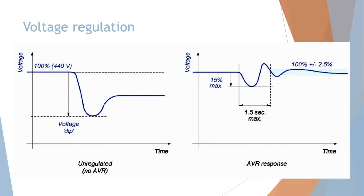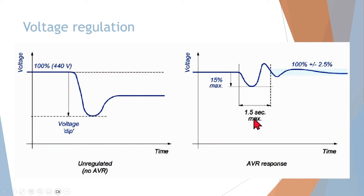By regulatory requirements from IACS or class regulation — classification society regulations — in the marine industry you have to maintain bus bar voltage. Your generator or AVR characteristic should maintain the bus bar voltage. In any case of load variation, the maximum voltage dip should be limited to 15 percent and it should recover within 1.5 seconds. The permanent voltage deviation acceptable is within plus or minus 2.5 percent of the rated voltage.